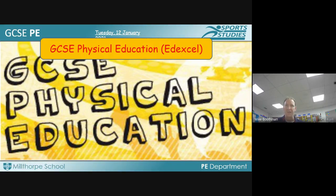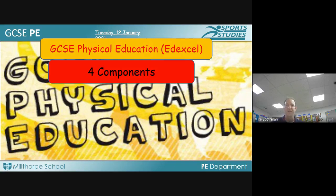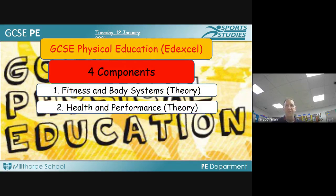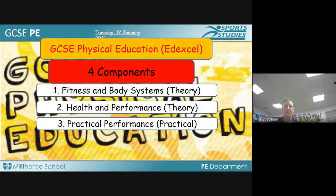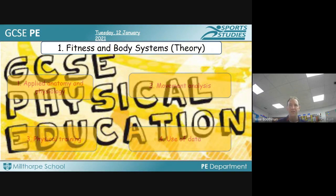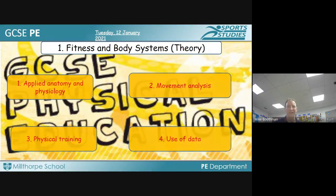With our course, GCSE Physical Education, there are four components: fitness and body systems, health and performance, practical performance, and a personal exercise program. Two of these components are theory-based learning and two are practical-based components.